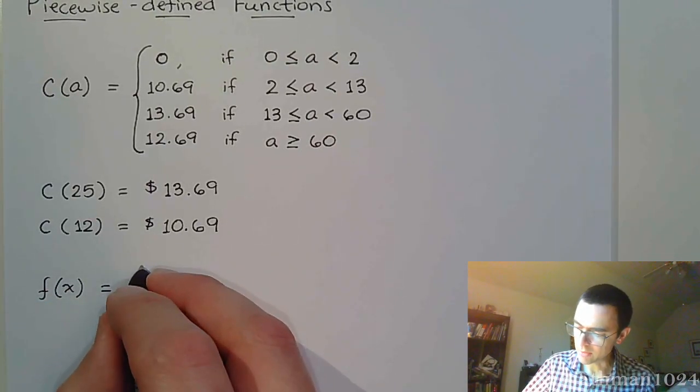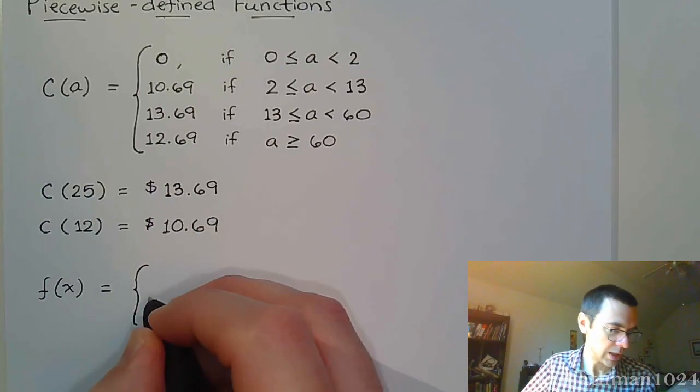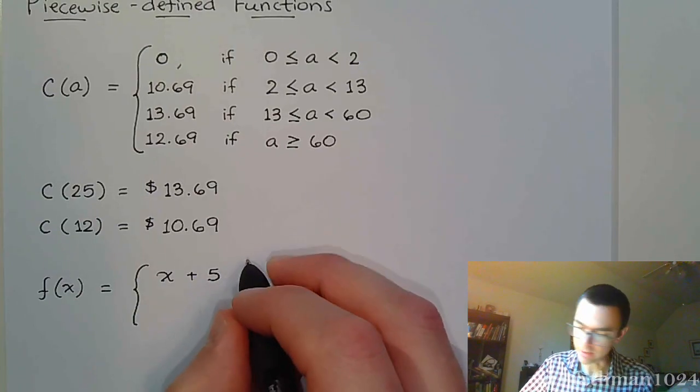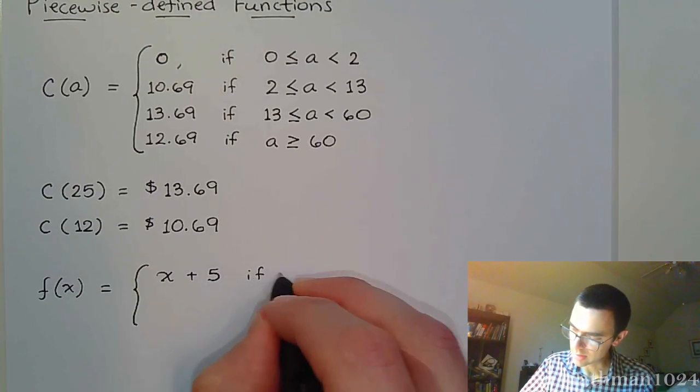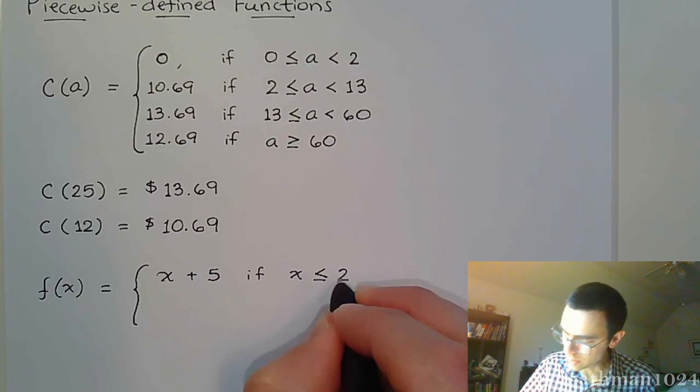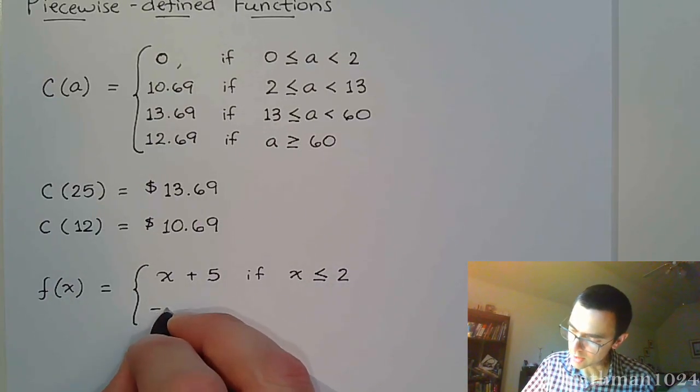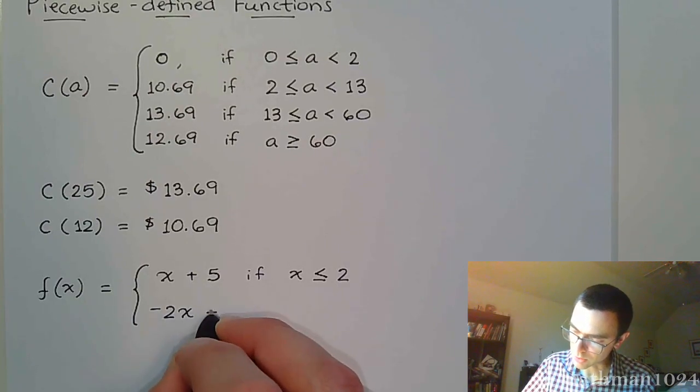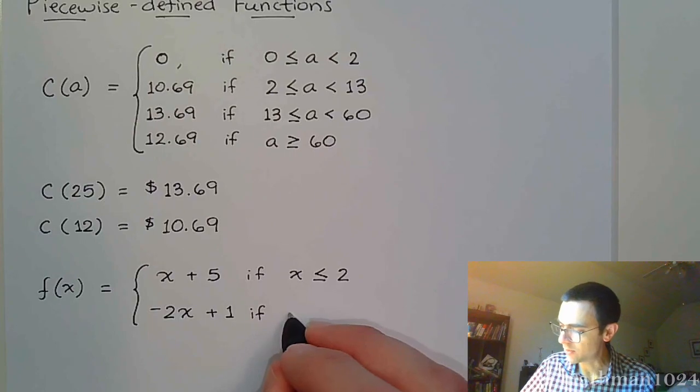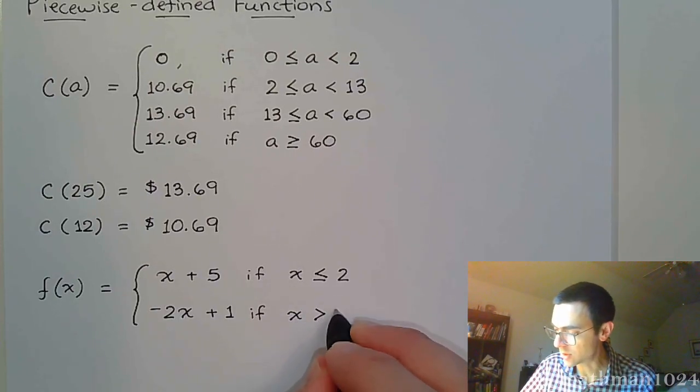So let's look at f(x) equals x + 5 if x is less than or equal to 2, and then f(x) equals -2x + 1 if x is greater than 2.